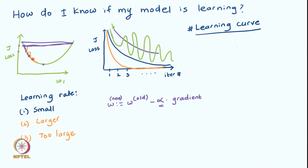This brings us to the end of this module. We studied different optimization algorithms of the gradient descent family — batch gradient descent, mini-batch gradient descent, and stochastic gradient descent — and understood how to monitor and diagnose training problems using learning curves, and how to fix them. See you in the next session. Thank you.